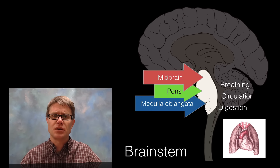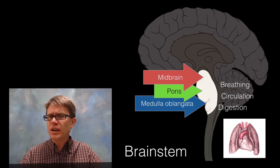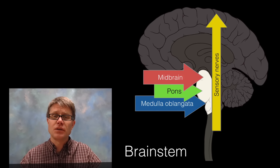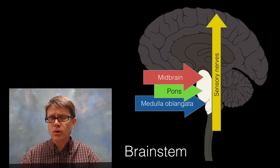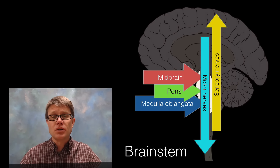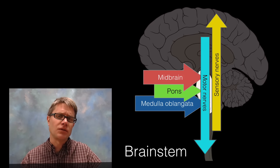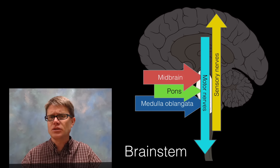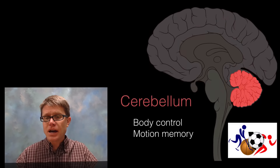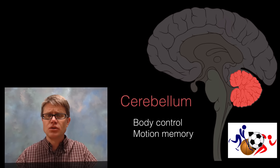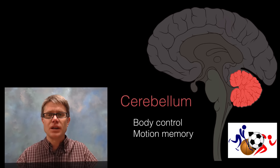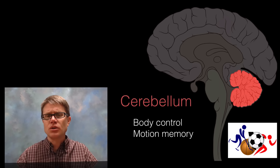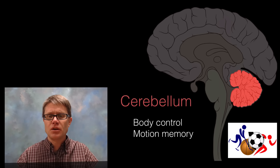Any damage to the brain stem is going to be catastrophic. It also routes and filters sensory information coming up to the brain and motor nerves going out, sending information where it needs to go. Behind the brain stem we have the cerebellum, whose function is motor control — it gives you coordination during sports, for example — and also motor memory, so as you learn to ride a bicycle and remember how to do it, that's thanks to your cerebellum.